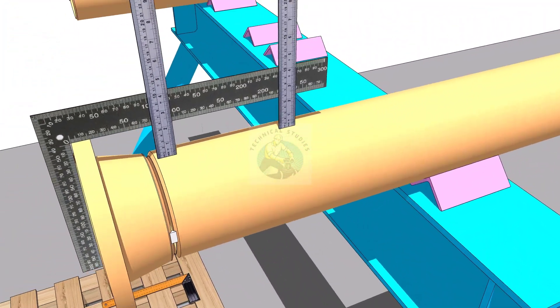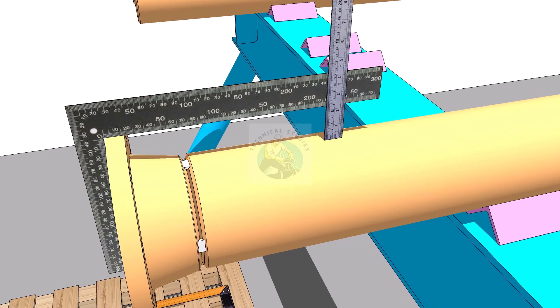Similarly, correct the vertical squareness and tack weld on the top and bottom sides of the joint, and remove the gap